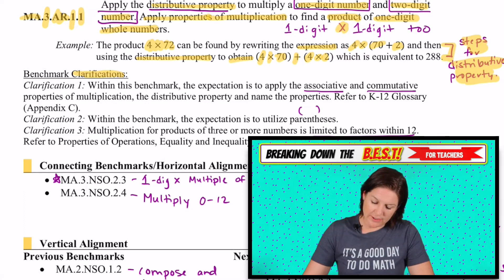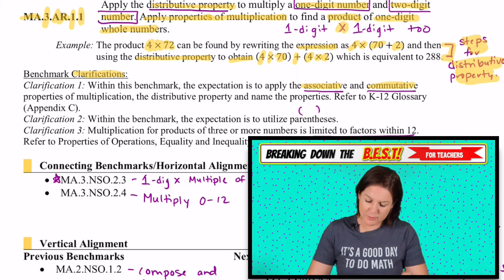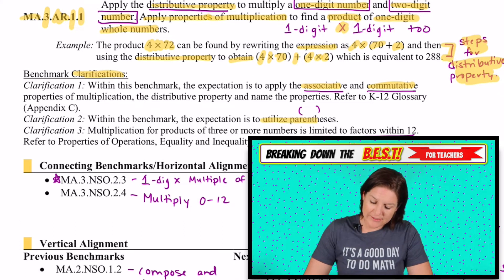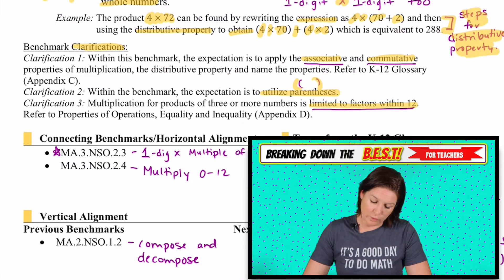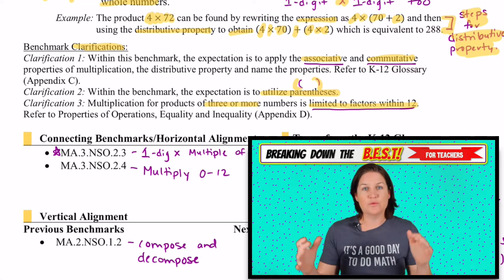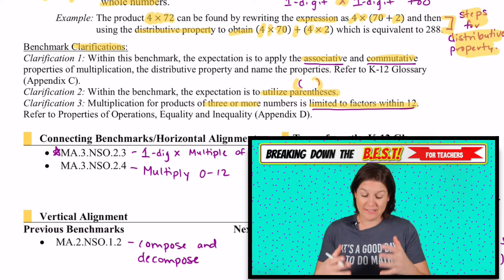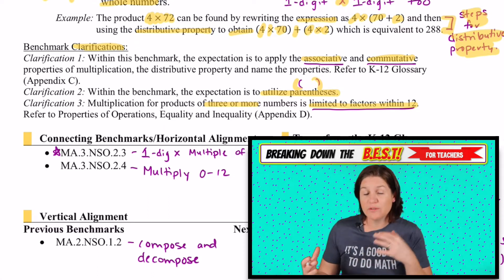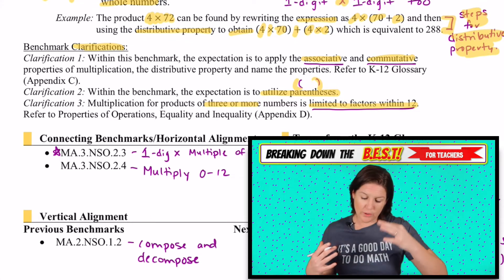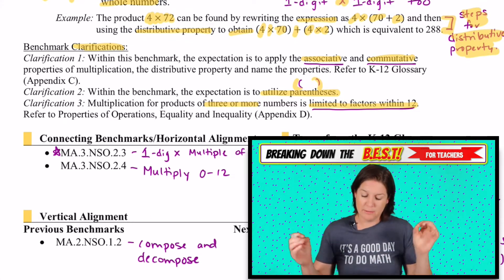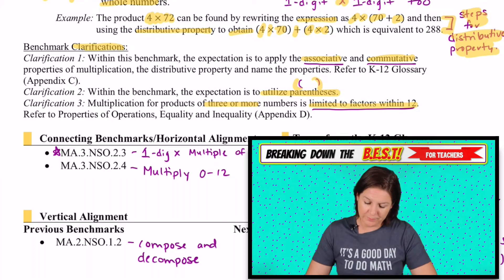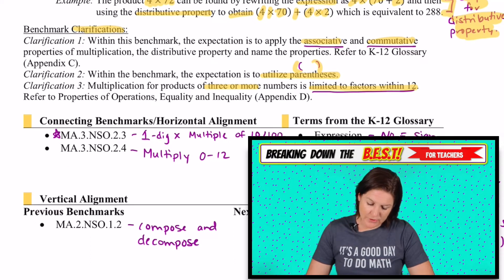Let's see what else jumped out at me with these clarifications where they give you a little bit more knowledge about the standard. It says within this benchmark, the expectation is to apply the associative and commutative properties. We talked about that. We will be utilizing parentheses, just like we did up in the example, when we're multiplication for products of three or more numbers, we need to make sure we're keeping those within the factors of 12.